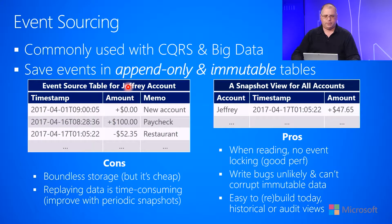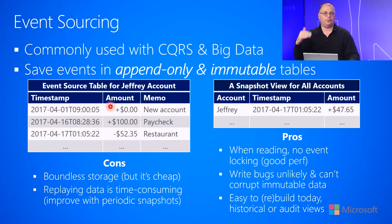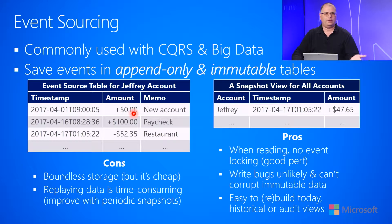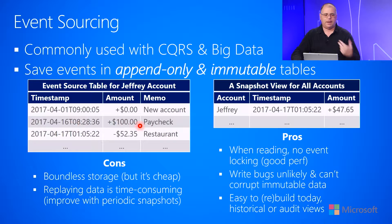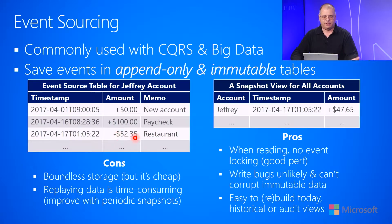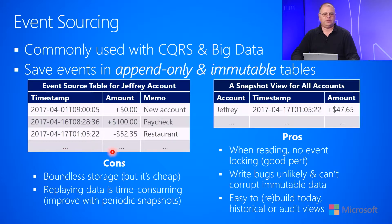Here I have an event source table for Jeffrey's bank account. We store in this table the different things that are happening to it. On April 1st, 2017 at 9 o'clock, zero was added to the bank account with a memo of opening a brand new account. Then on April 16th, a paycheck of $100 came in. And then on April 17th, a restaurant purchase of $52.35 was made. Over time, we just add more and more entries into this table.